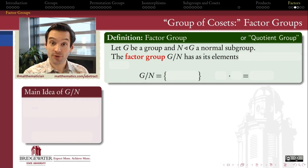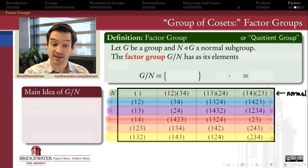Now remember, how is this supposed to work? The factor group G mod N is supposed to be the group whose elements are the cosets of N inside G, when N is a normal subgroup.